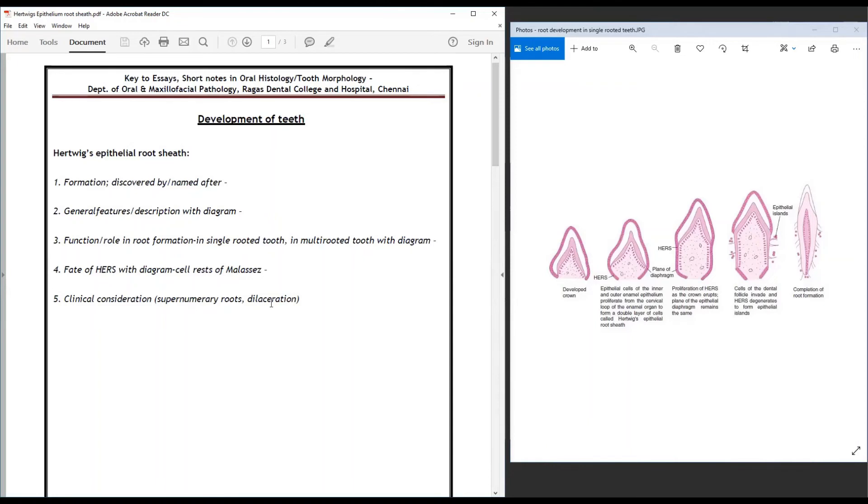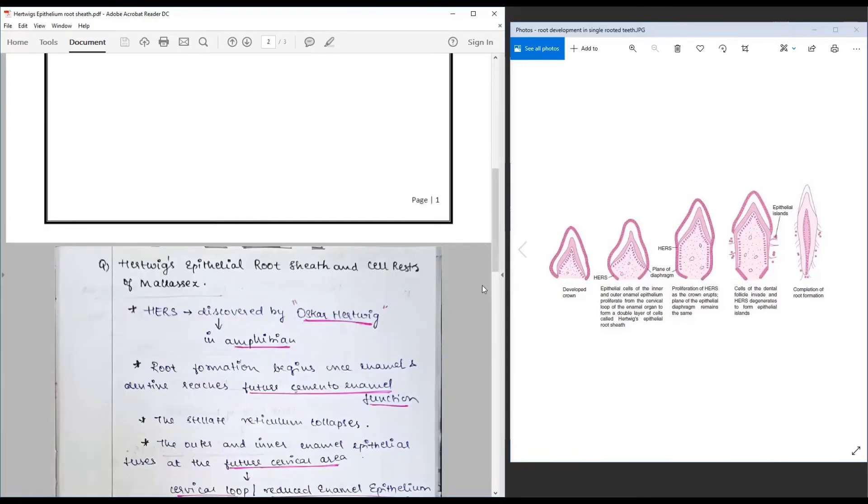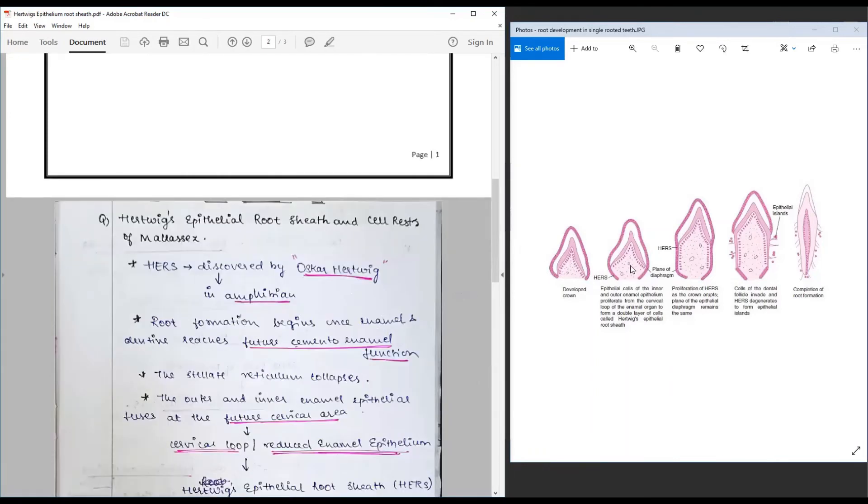Association with supernumerary root and dilaceration. These are the clinical significance of Hertwig's epithelial root sheath. You start from where it starts, the cells that contribute to the formation of HERS, the fate, the plane...